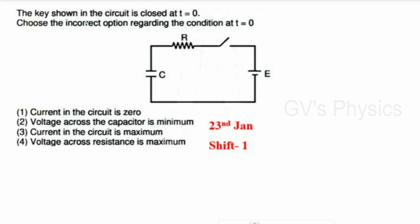Ninth question: A key in the circuit is closed at time t = 0. Choose the incorrect option regarding conditions at t = 0. The circuit has a battery, resistance, and capacitor in series. At the instant of closing, the capacitor acts as a short-circuit wire, so no charge is stored and the voltage across the capacitor is minimum.